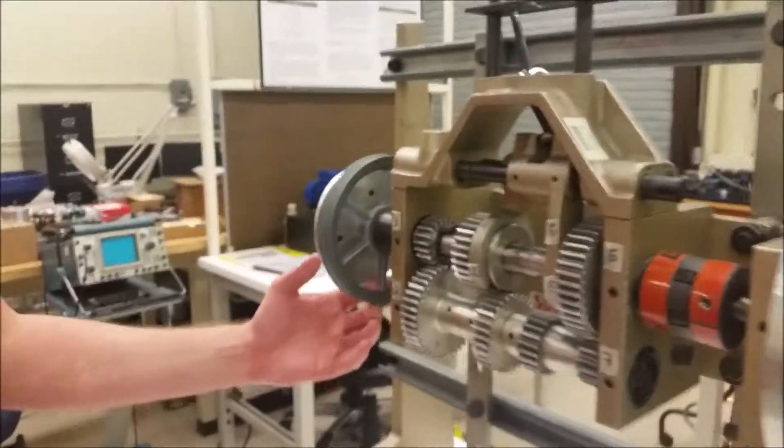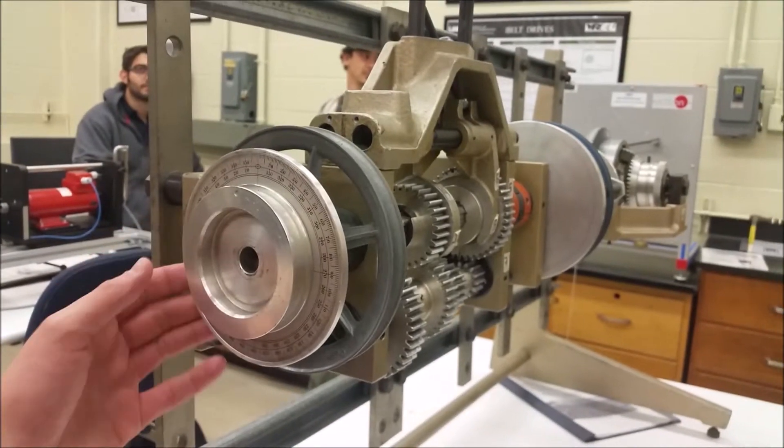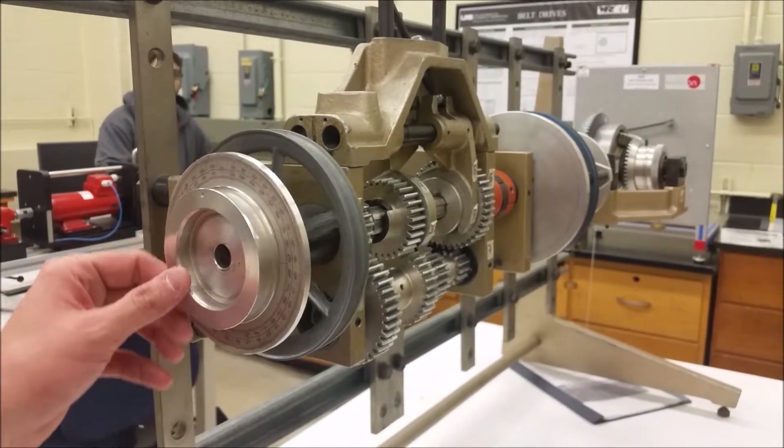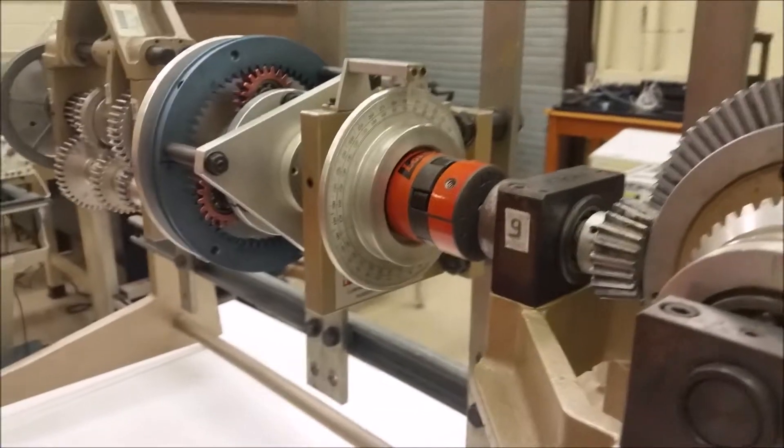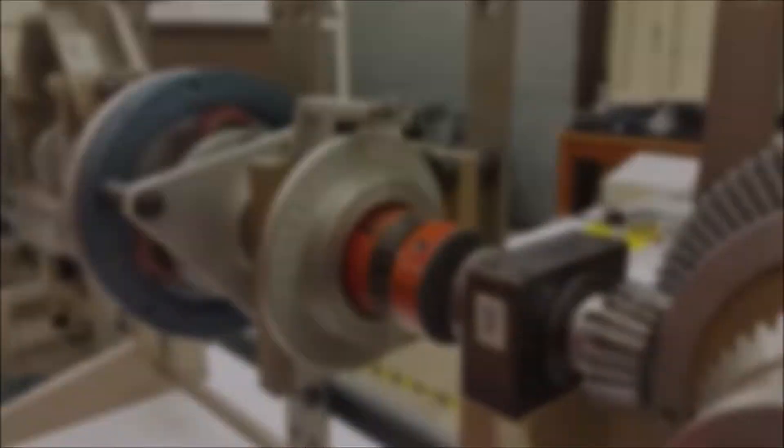Then we're going to do the exact same procedure as before by utilizing 360 degrees for every single input angle here, which is one revolution, and then for each gear, we're going to come back here and read the corresponding output angle for first, second, third, and reverse gear.